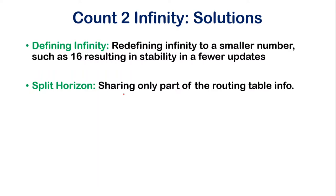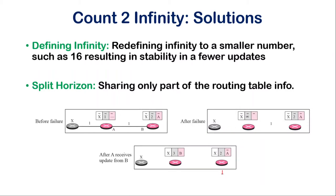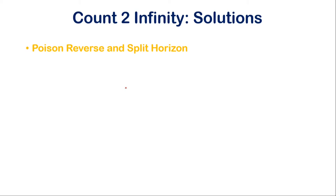Another solution is split horizon. In split horizon, instead of sharing the whole routing table, only part of the information is shared. The looping problem occurred because node B sent its routing table to node A after the link broke, causing a loop. Split horizon suggests that node B does not need to advertise a route back to node A if that route was originally learned from A. This way, node B's distance to X stays at 2 until node A sends its updated route with infinity, at which point node B can correctly update its table.